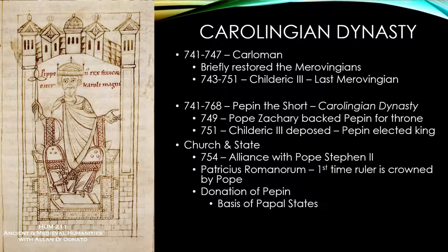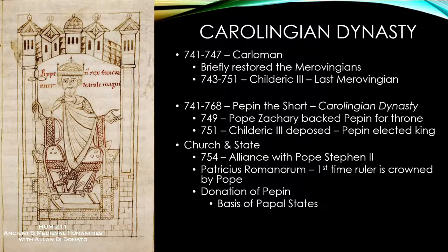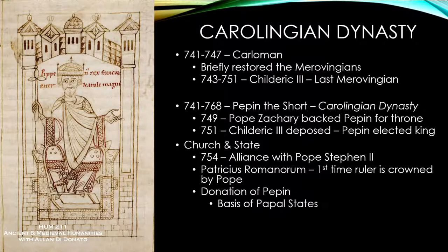Pepin returned the favor by giving what's known as the Donation of Pepin to the pope — an actual land grant to the papacy. Pepin came into Italy, defeated the Lombard enemies of the papacy, and gave a chunk of land to the pope, which became the future Papal State. So the pope in the Middle Ages wasn't merely a religious figure — he was actually a legitimate monarch with his own territory governing central Italy, including the city of Rome.